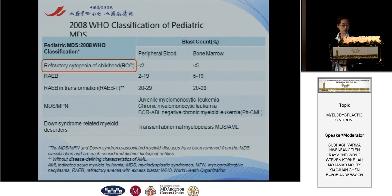In 2008, the WHO classification put forward a new subtype — refractory cytopenia of childhood, RCC — in pediatric MDS, and REBT is still diagnosed in pediatric MDS. This is different in pediatric MDS. After that, a lot of doctors studied more about MDS RCC, so today I want to focus on MDS RCC patients.